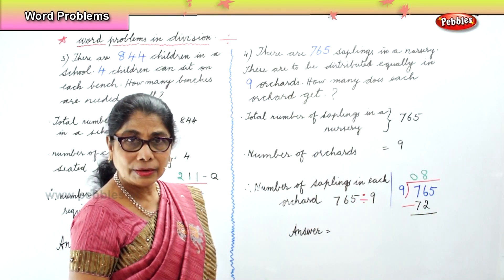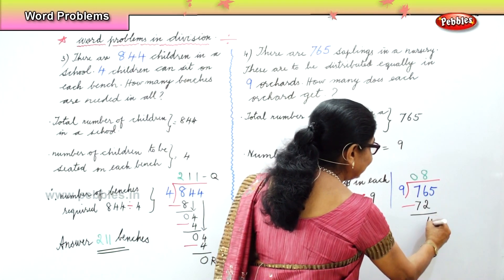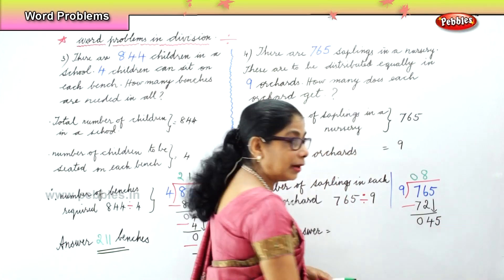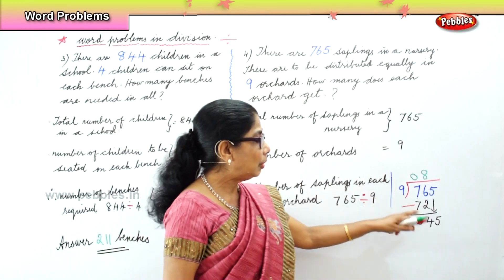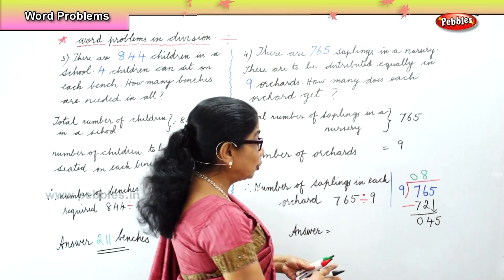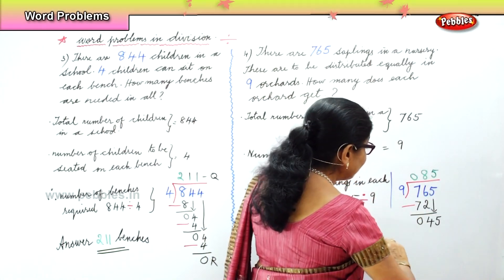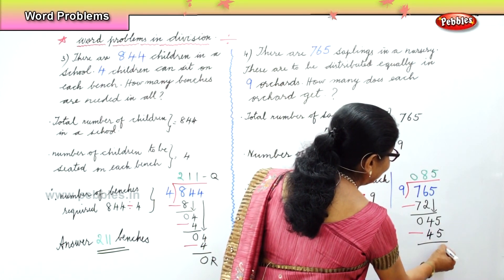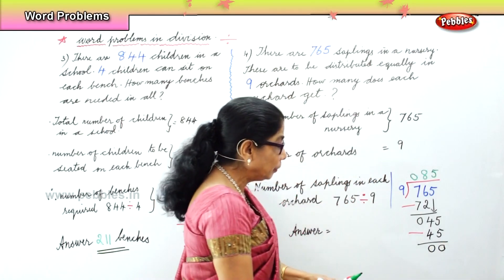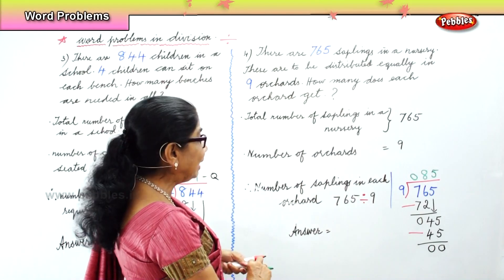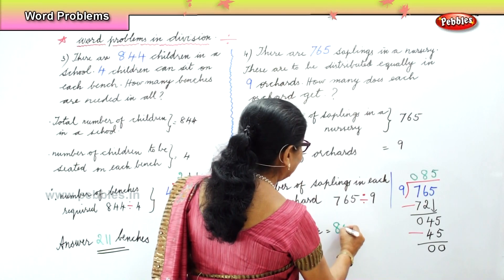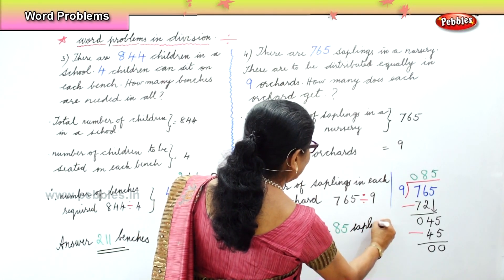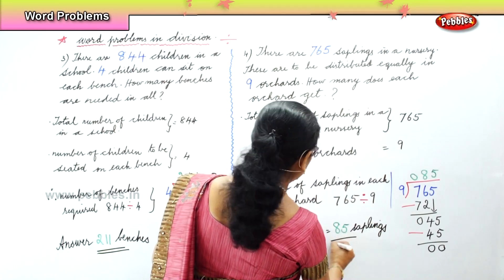Six take away two is four, seven take away seven is zero. So we bring down the last number five, and now we get forty-five. Nine goes into forty-five five times — nine fives are forty-five, so minus forty-five. Forty-five minus forty-five is zero. No remainder. So the total number of saplings each orchard gets is eighty-five. One orchard will get eighty-five saplings. That's your answer.